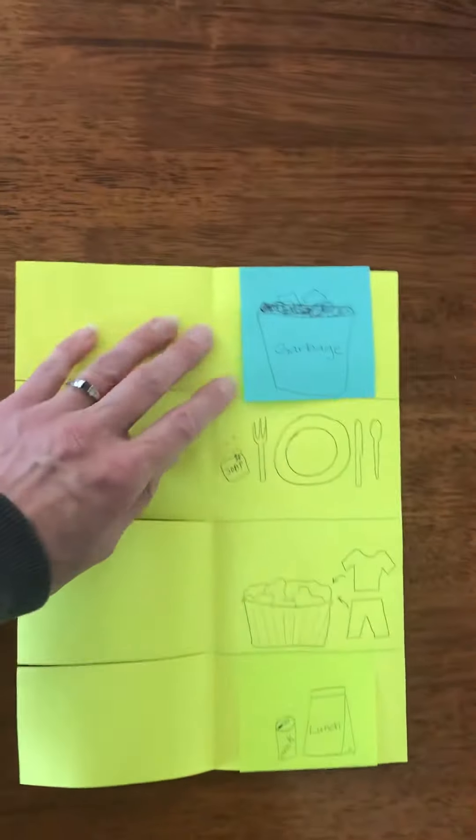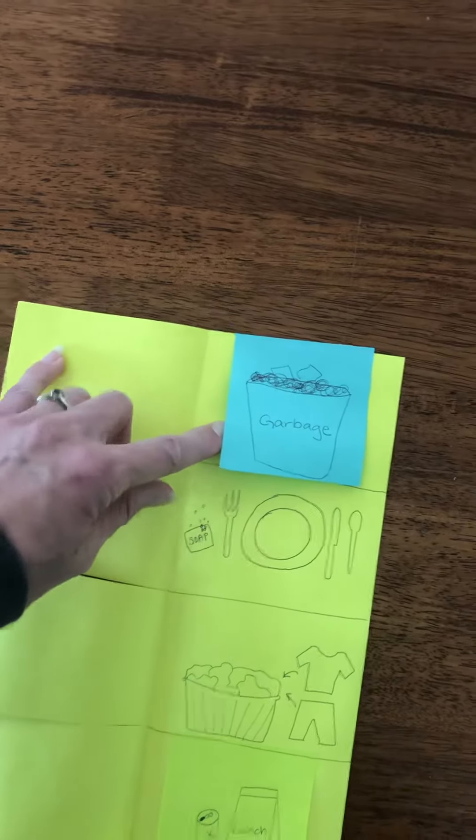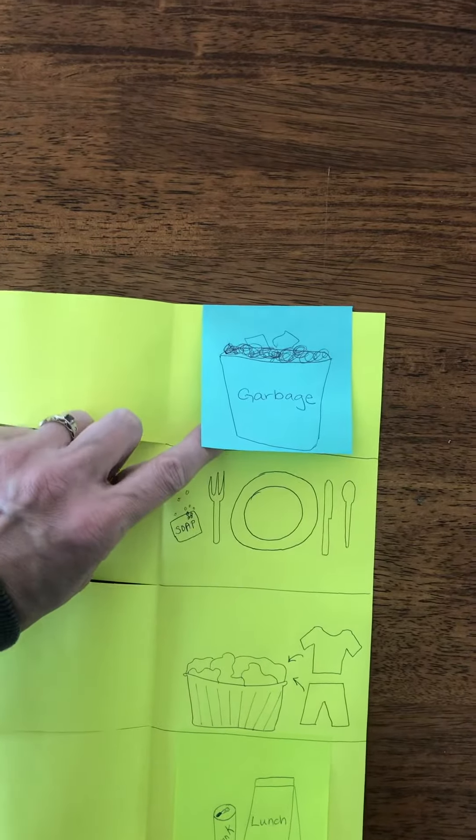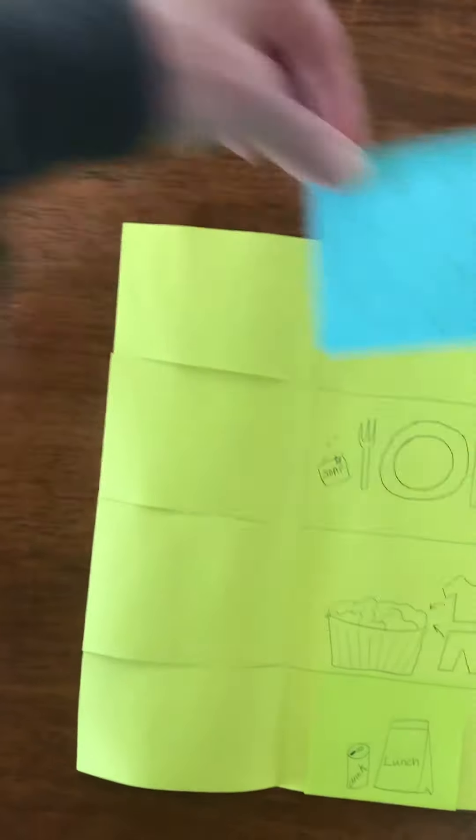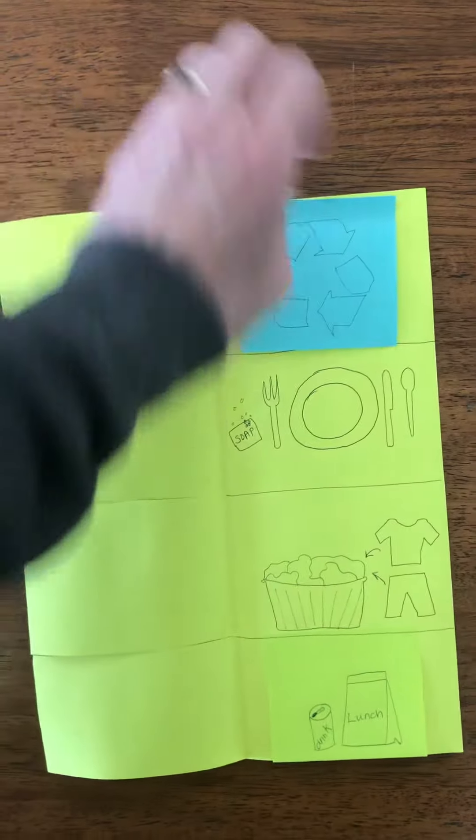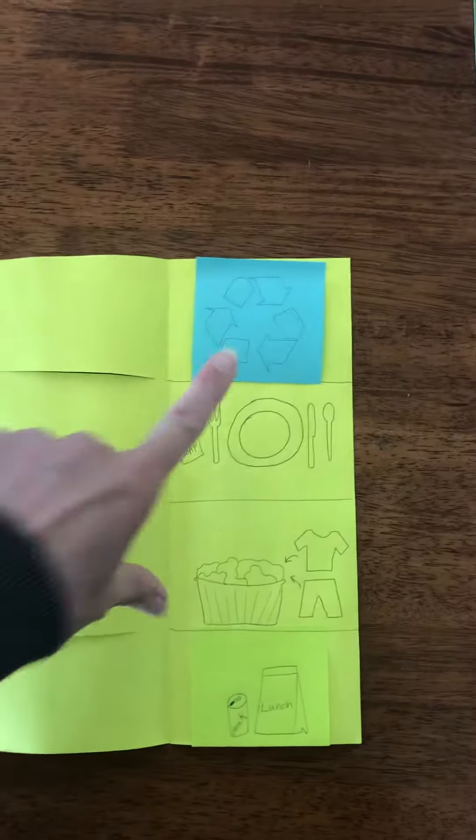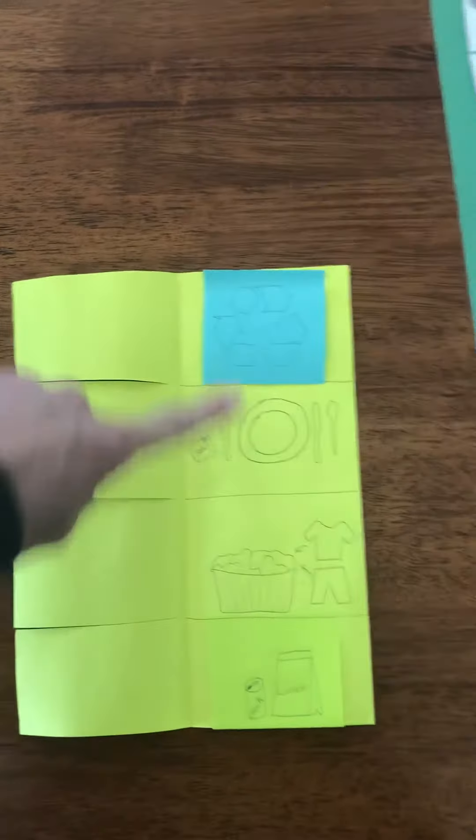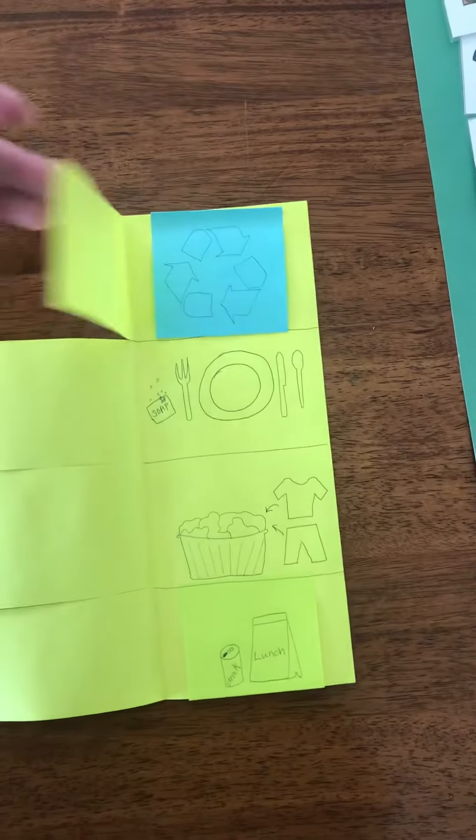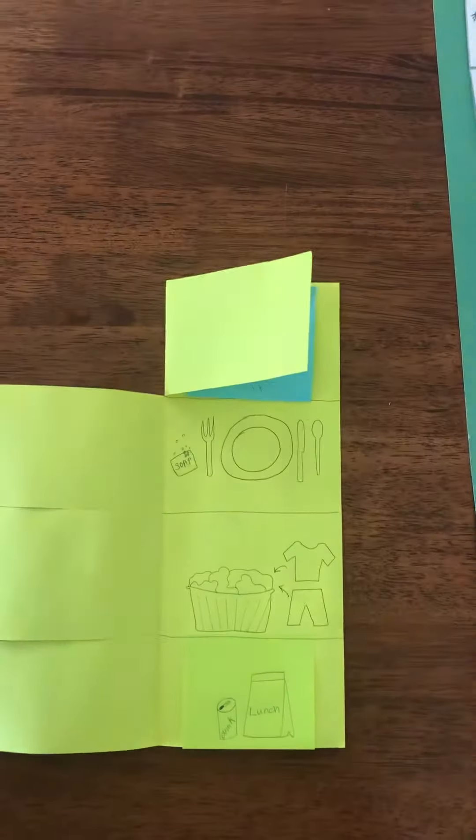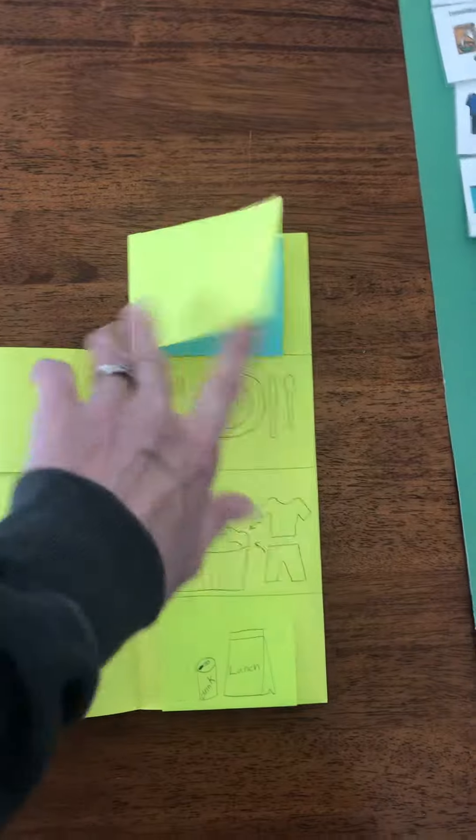You can see here that I actually use post-its. Post-its I love because they do make these things interchangeable. For example, today might be garbage day, but I want to change it so that tomorrow when he goes to check his schedule, he knows, I got to take out the recycling. So then when he's done with that, close it up and he's done with recycle and he can move on to his next chores.